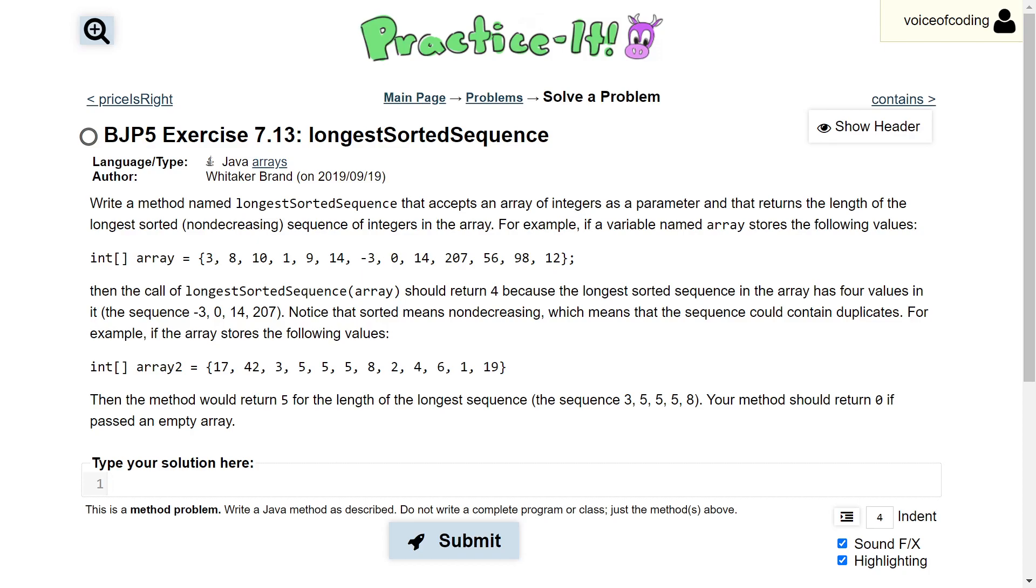17, 42, 3, 5, 5, 5, 8, 2, 4, 6, 1, 19, then the method would return 5 for the length of the longest sequence, the sequence 3, 5, 5, 5, 8.